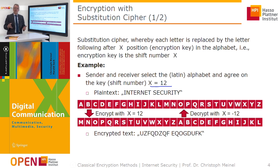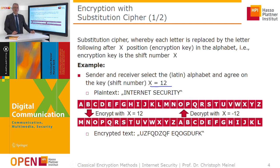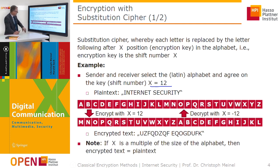The only thing an attacker can do is try to find out the encryption method. Once they determine it is a substitution cipher, they need to find the shift position. This is difficult for humans, but not difficult for computers, which can test shifts very quickly.